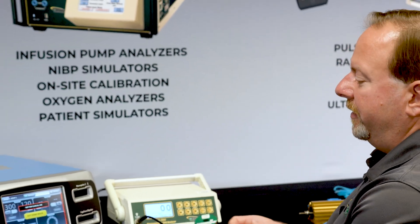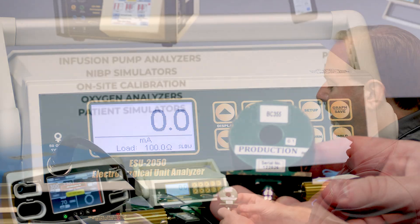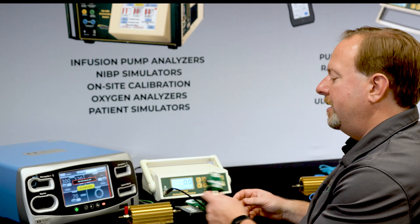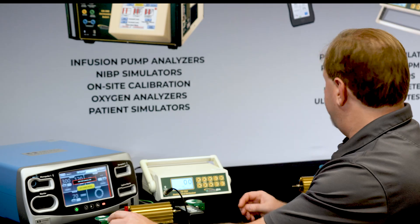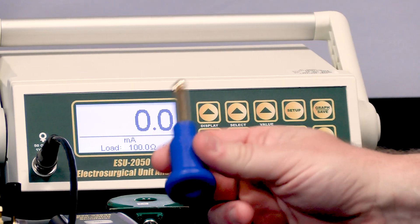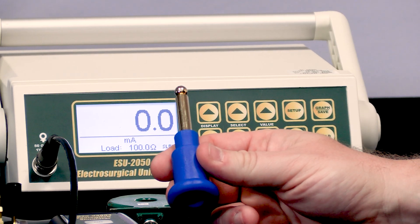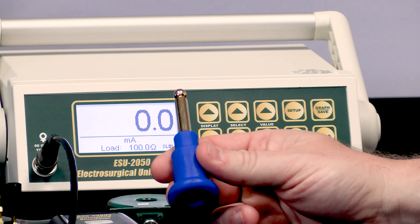To make our connections for leakage testing, we have our 0.1 to 1 current transformer that's connected to the 2050 already. We also have our footswitch port adapter since we're going to start with monopolar output testing.